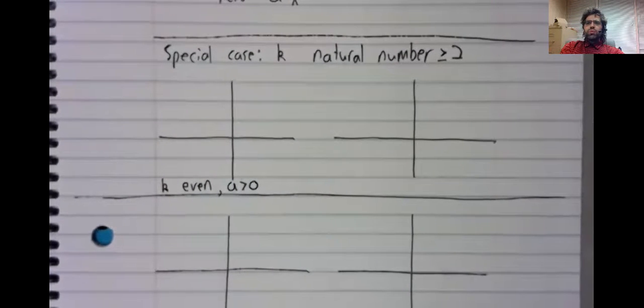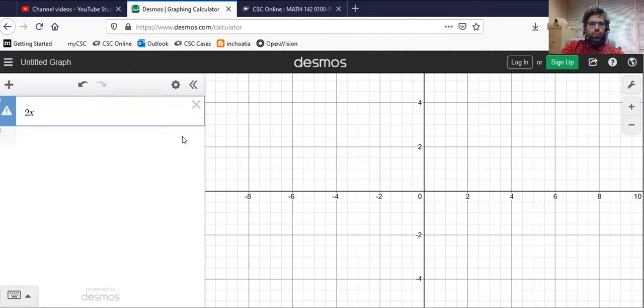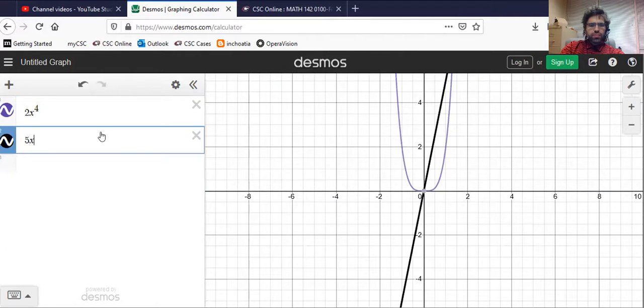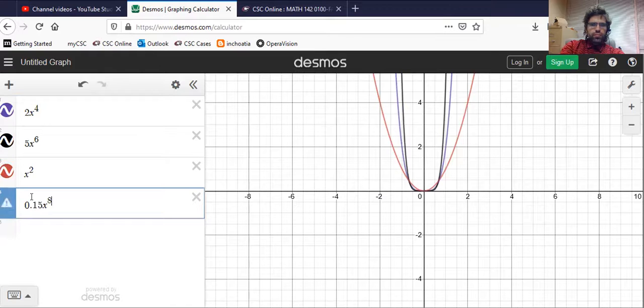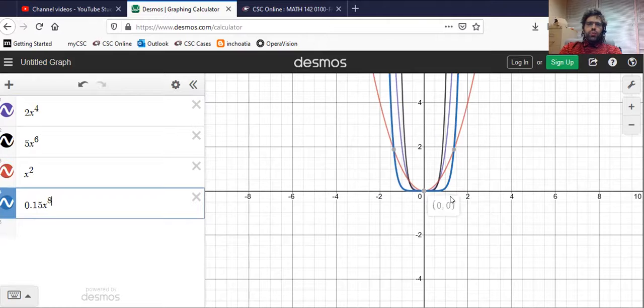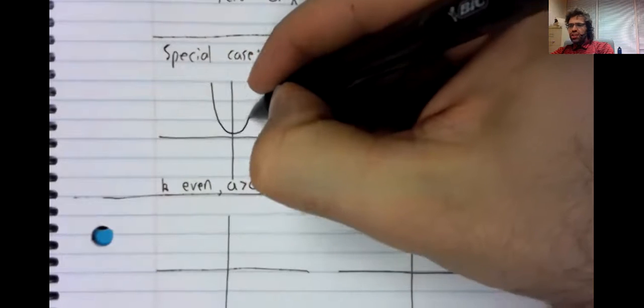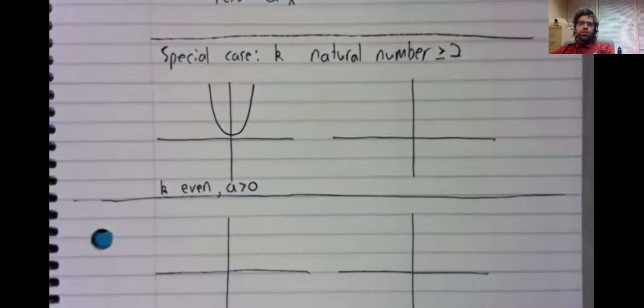If we go to Desmos and we graph a bunch of examples of this, we see a lot of similarity. Oh, it's true that the details differ, but fundamentally, all of these graphs look basically like that. Not a parabola, but parabola-esque.